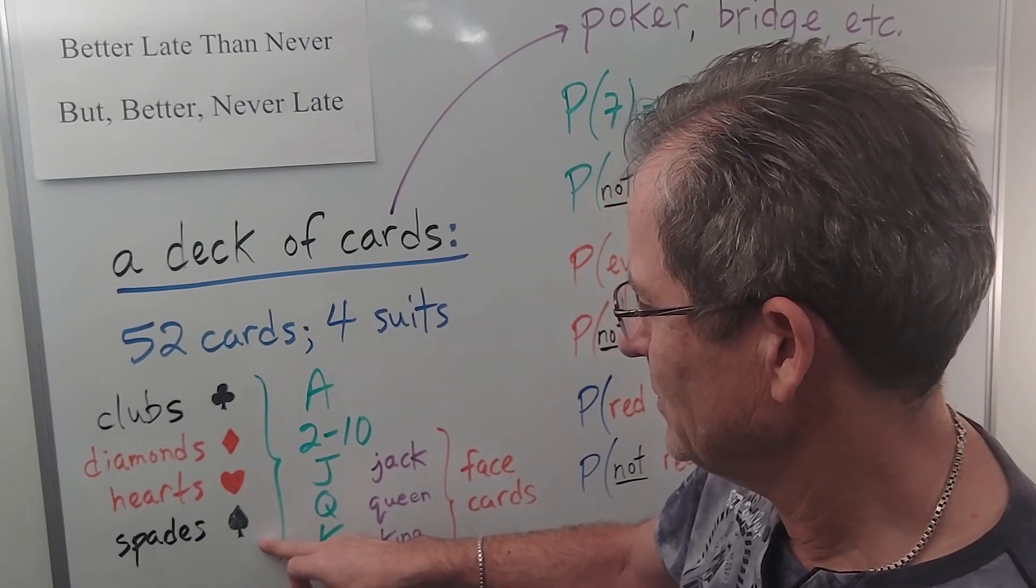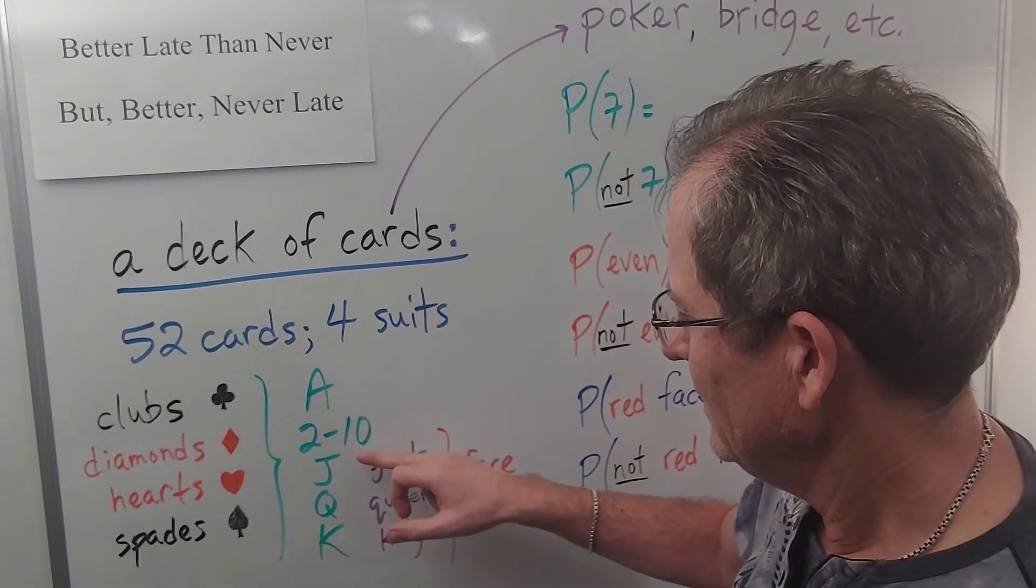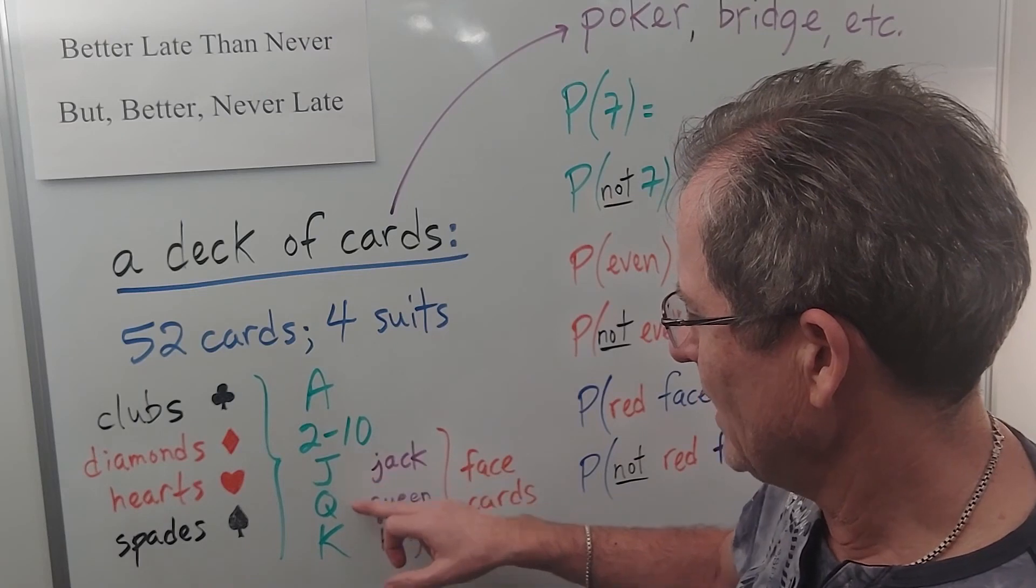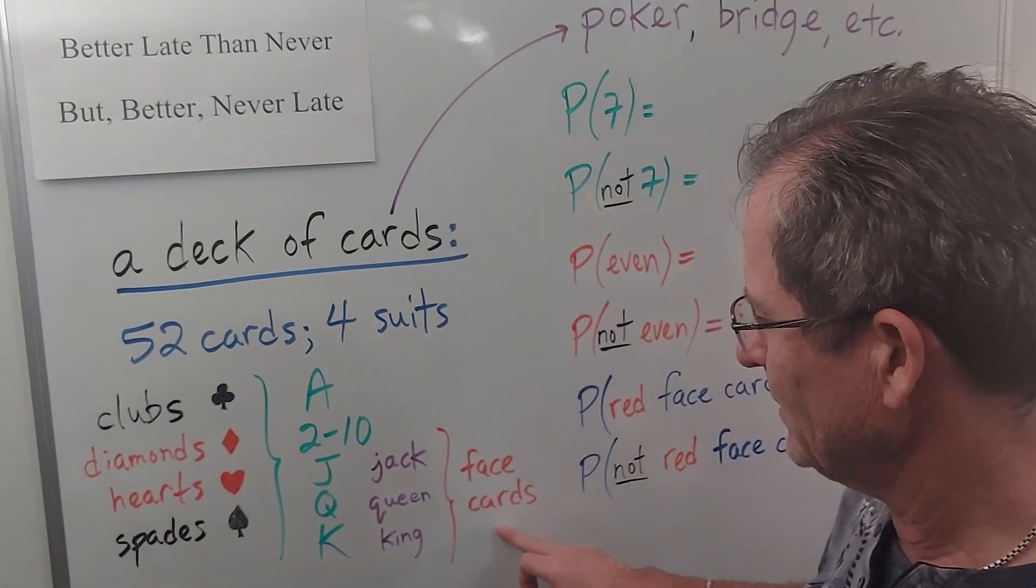A standard deck of cards has the four suits clubs, diamonds, hearts and spades and each suit has an ace, numbers two to ten, a jack, a queen and a king. These are called face cards.